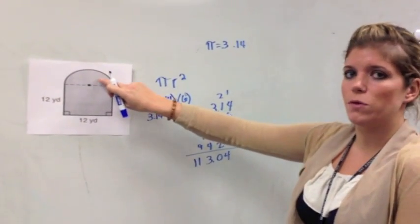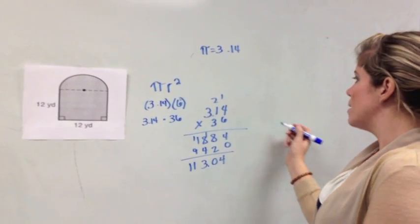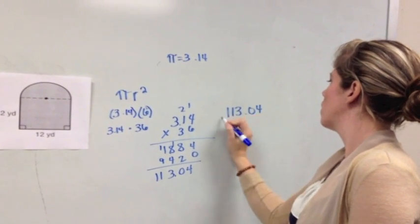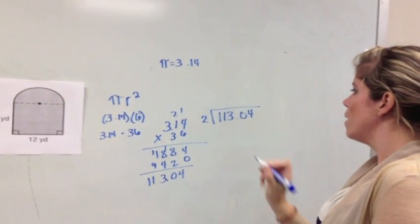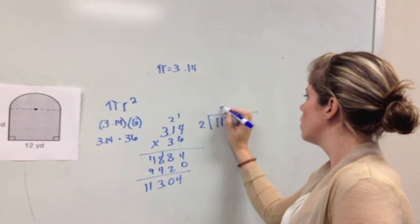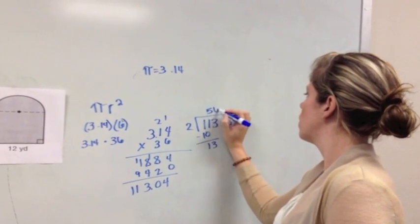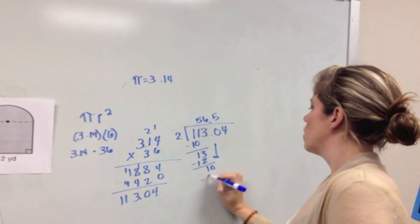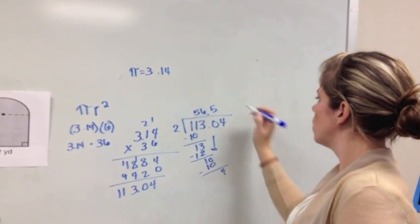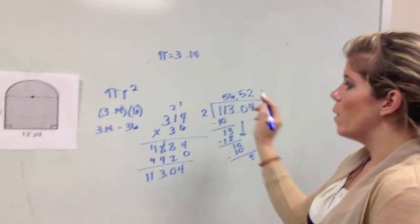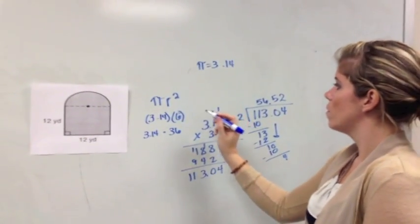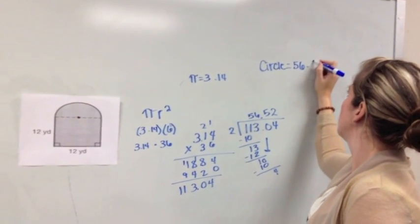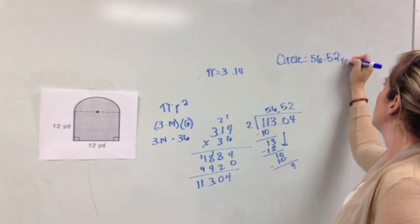Okay? Now I'm not done. I notice here that I don't have a full circle. So I'm going to take this number, and I'm going to divide it by 2. 2 goes into 11. Bring up my decimal. And I get 56.52 for my area of the circle. So for circle, I'm going to write 56.52 yards squared.